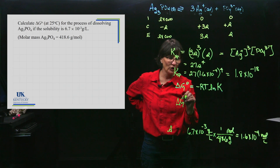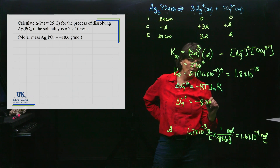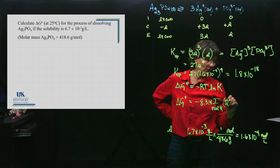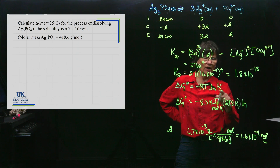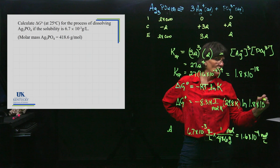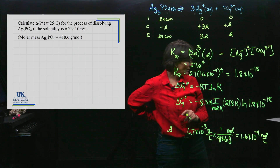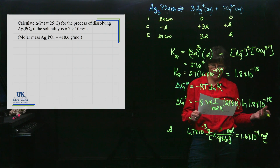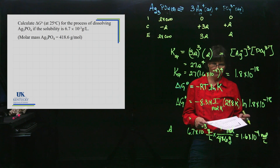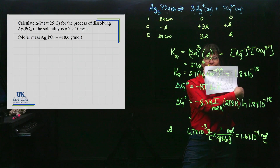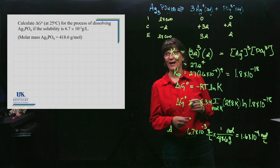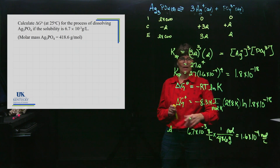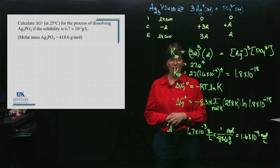The natural log of 1.8×10⁻¹⁸ is negative, so the overall result will be positive — and quite positive. You figure out the exact number and put your answer in. It ought to be positive, because this is a nonspontaneous dissolution under standard state conditions.